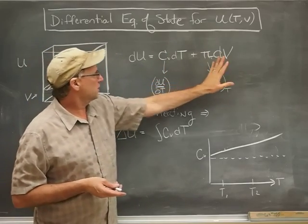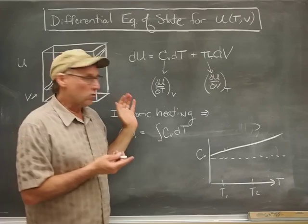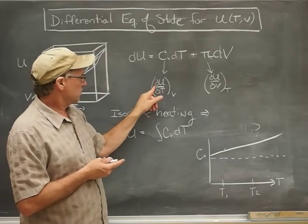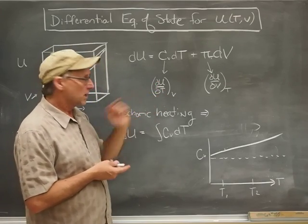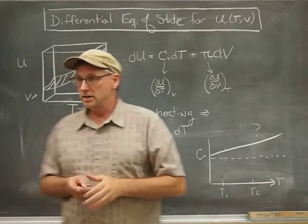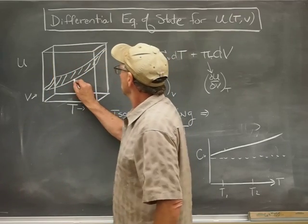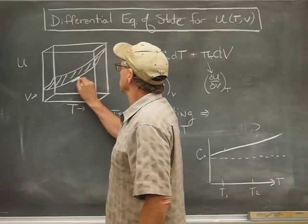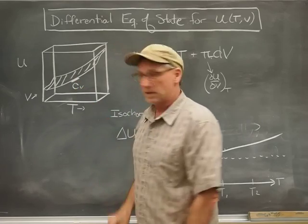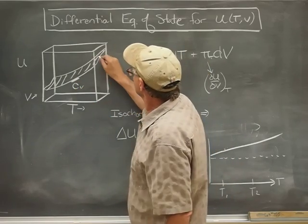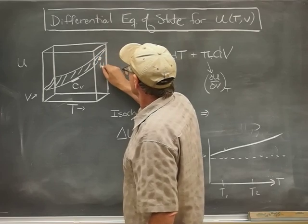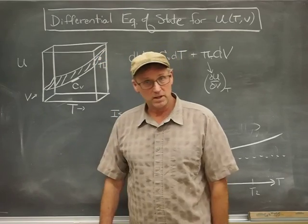Formally, these coefficients are the slopes. It's how U changes when the temperature changes holding the volume constant, i.e. an isochore. So that would be that slope right there, which I'm labeling Cv. This other number here, pi sub t, that's that slope right there.